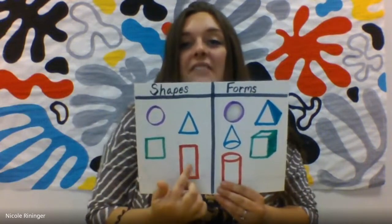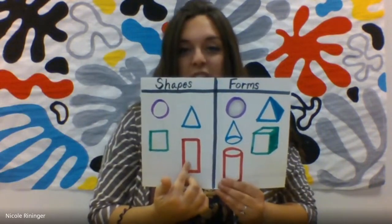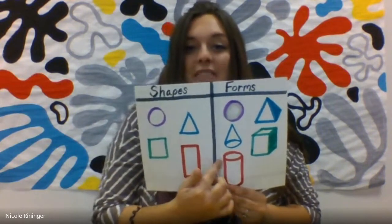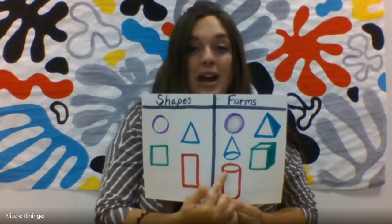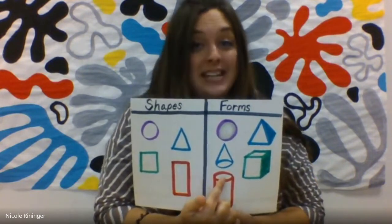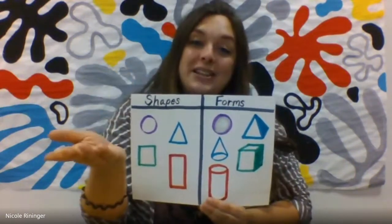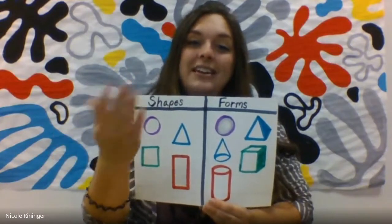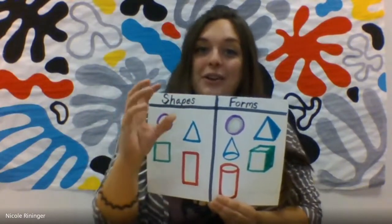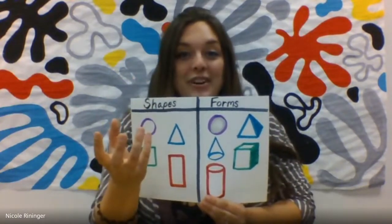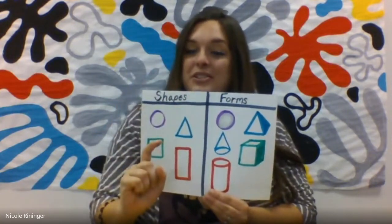And finally I have a rectangle here which is a flat shape, but if I give it space, this now becomes a cylinder. Can you say cylinder? Very good. And so if you ever see a soup can or a pop can, those are cylinders as well.